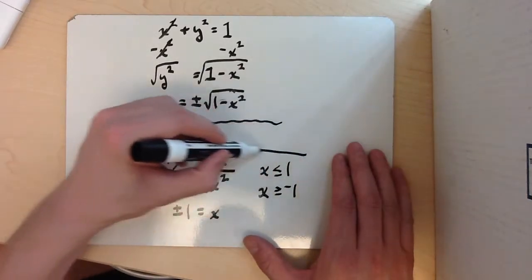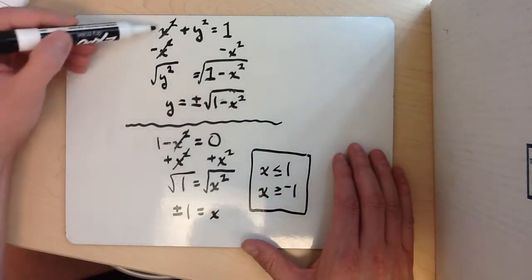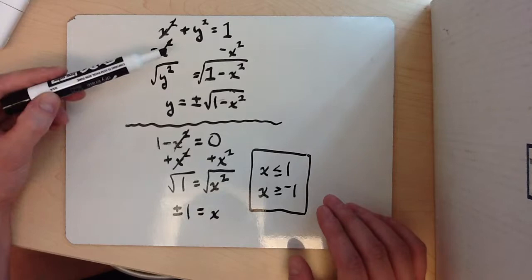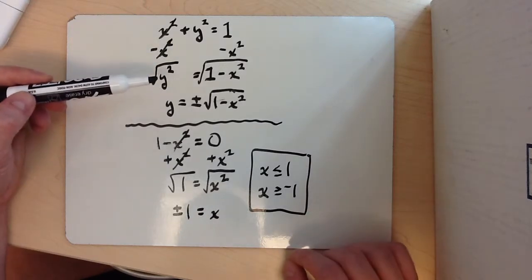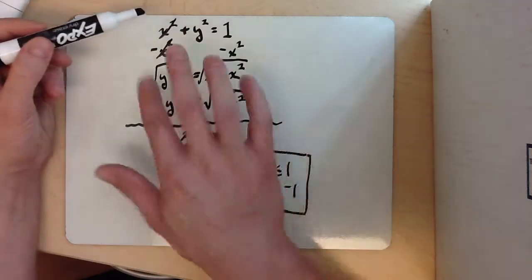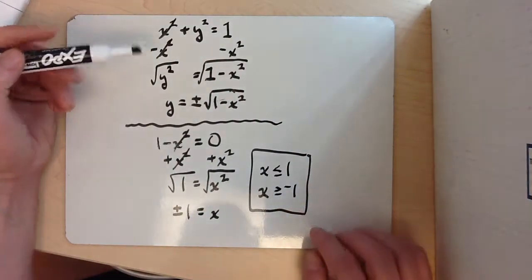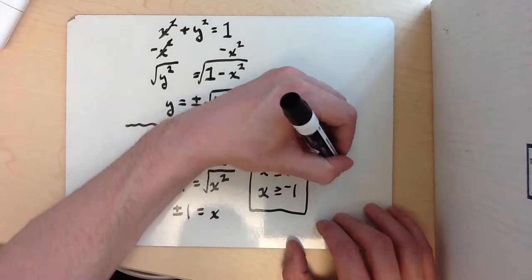So this is going to represent our domain of the equation. Now you can do the exact same thing with y to get the range. Because they're added right here, you can actually just flip-flop them and it's going to end up being the same thing.